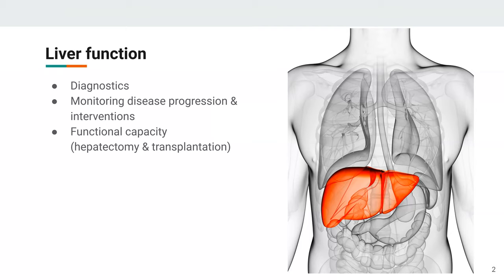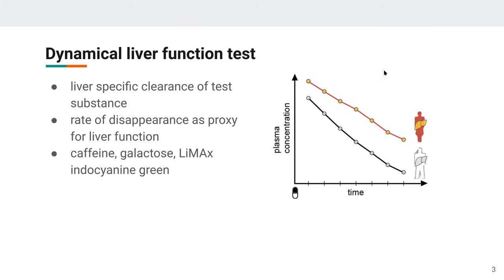In liver surgery this is very important because after a partial hepatectomy or transplantation you want to know how much remaining liver function you'll have, which is of course important for survival. A very interesting approach to measuring liver function are so-called dynamic liver function tests — you give a test substance which is specifically cleared by the liver and use the rate of disappearance as a proxy for liver function. This substance is metabolized specifically by the liver, and you can use that to evaluate liver function.